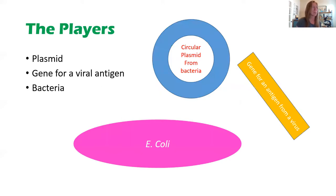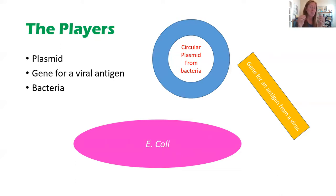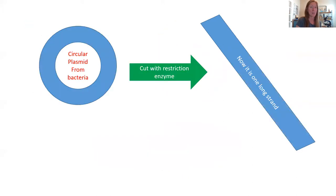So here are our major players. We have a plasmid from our E. coli bacteria. We have a gene for a particular antigen from our virus. And then we've got the E. coli bacteria themselves, which are going to be kind of like little cows that we can force to make our protein — and we'll milk our antigen from them.